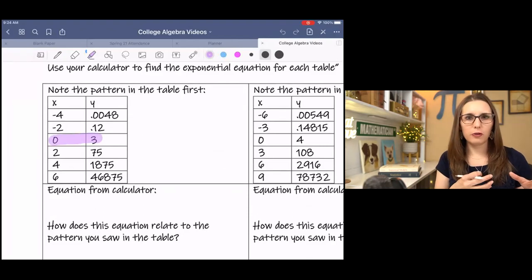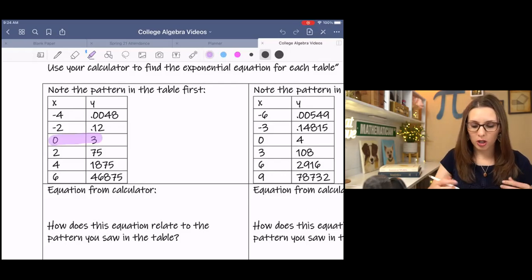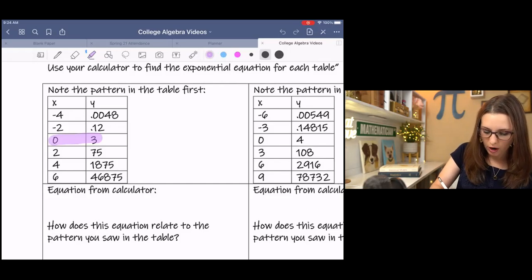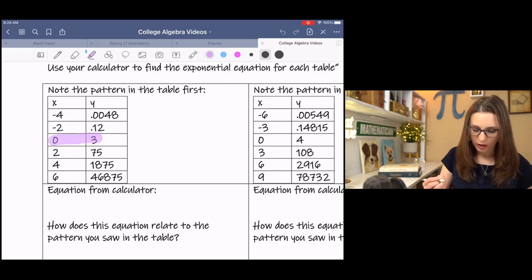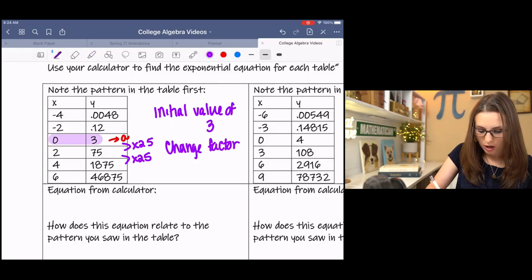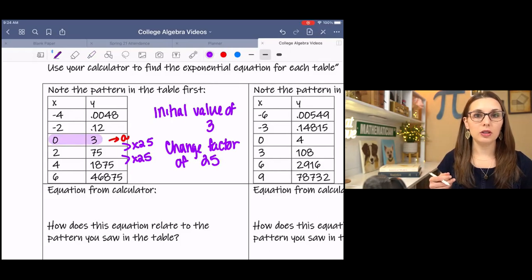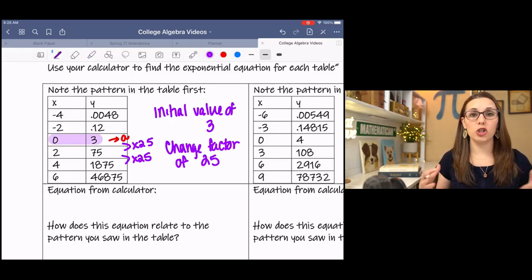This gives us our a value for exponential functions. That's that coefficient in front of our exponential component. And then we also know that the change factor has to be included in our equation. So this one has a change factor of times 25. The pattern is an initial value of 3 and a change factor of 25.